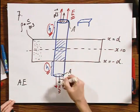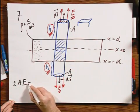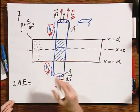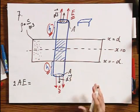But I have two surfaces, so I have 2A, and that now equals the charge inside. Well, maybe I am forgetting something. How about the flux escaping from the sides, from the cylindrical surface?